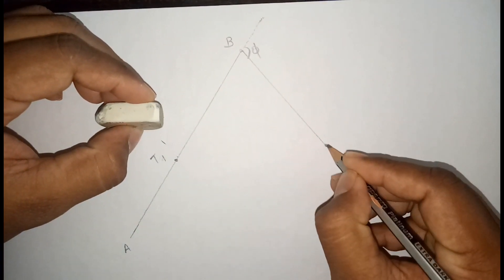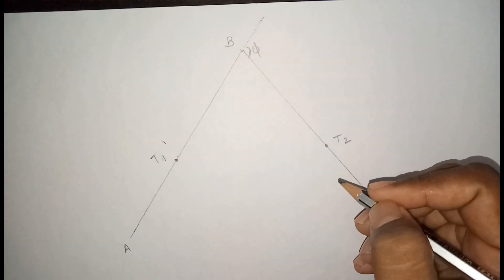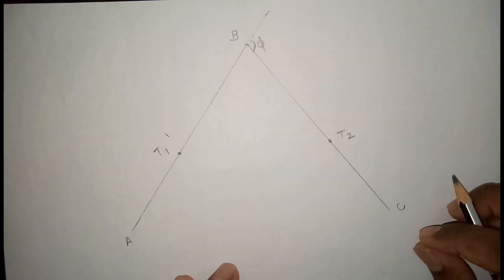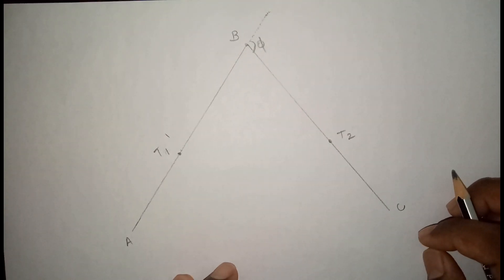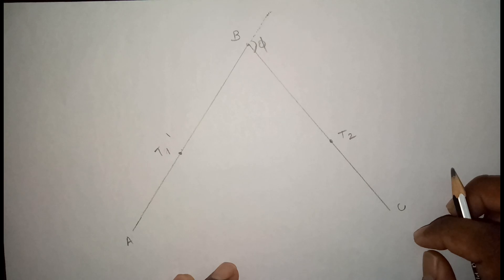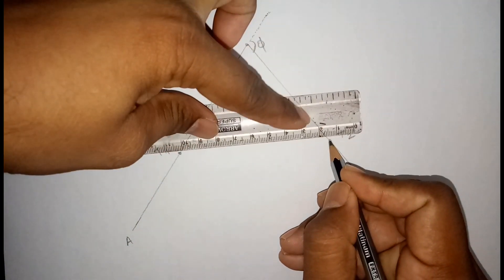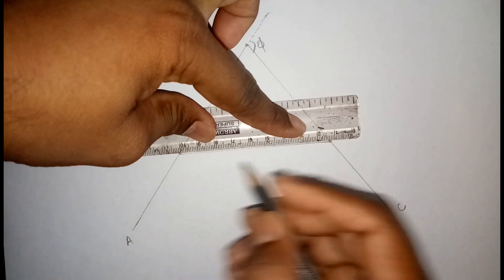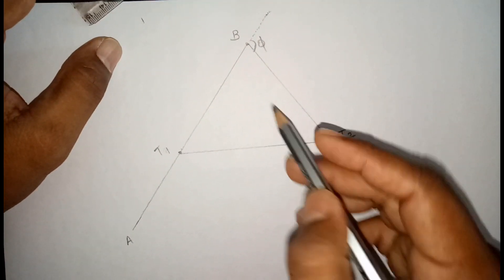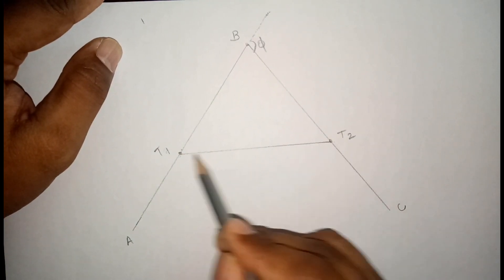The tangent length is equal to R·tan(Δ/2). Tangent length is calculated, and the length of the long chord is calculated as 2R·sin(Δ/2). The deflection angle is plotted, T1 and T2 are plotted, and the length of the long chord is marked.